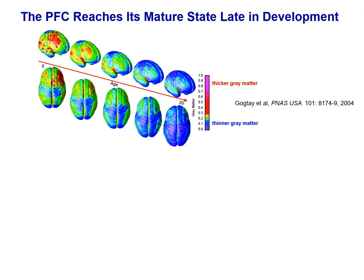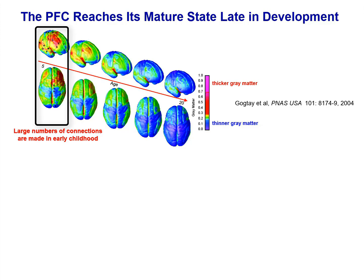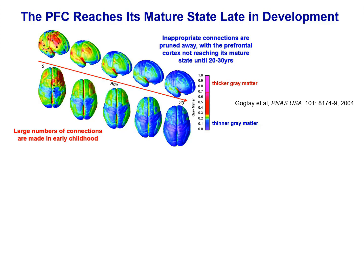The prefrontal cortex develops very slowly, especially compared to primary sensory and motor areas. This NIH study shows how cortical gray matter changes from age 5 to age 20. There are very large numbers of connections in the first years of life, and thus thicker gray matter shown in warmer colors, especially around age 5. As we grow older, the incorrect connections are pruned away. This happens quickly in sensory and motor cortices, but the prefrontal cortex does not reach its mature state until 20 to 30 years of age, with the process occurring earlier in females than males.